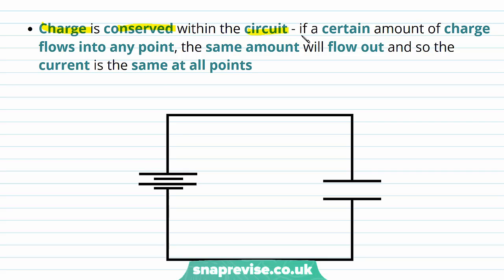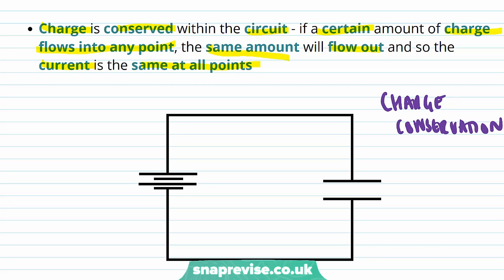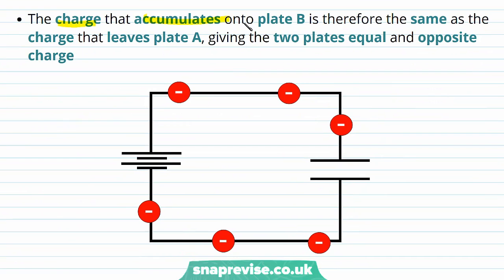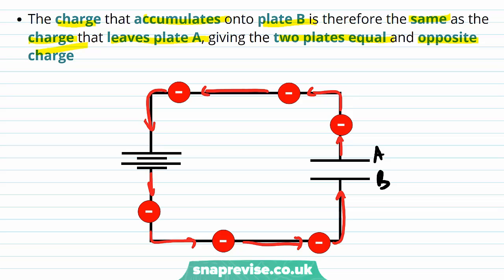Charge is conserved within the circuit. If a certain amount of charge flows into any point, the same amount will flow out, and so the current is the same at all points. The charge that accumulates on plate B is therefore the same as the charge that leaves plate A, giving the two plates equal and opposite charge.